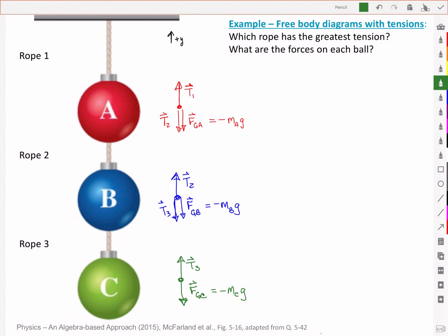For the bottom one, you'll notice then, if I add up these forces, I've got T3 acting upwards, so I've got a positive T3 and a negative MCG. And it's hanging in equilibrium. There's no acceleration, and so the net force is equal to zero.